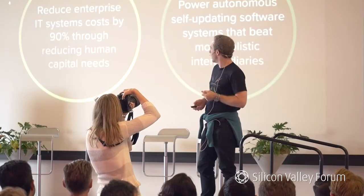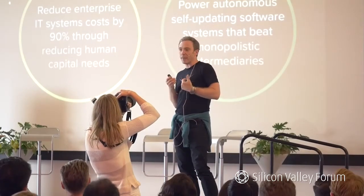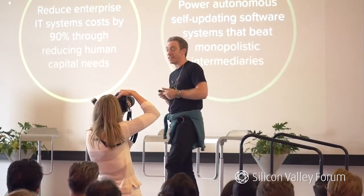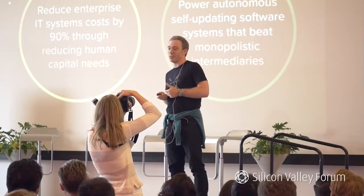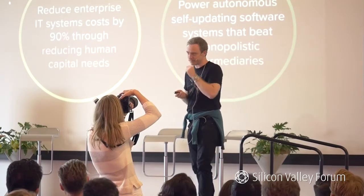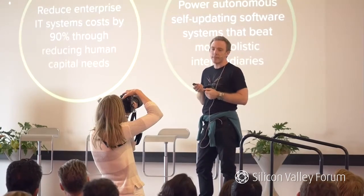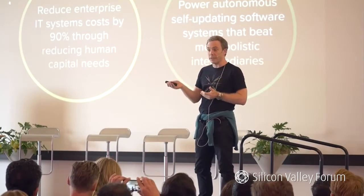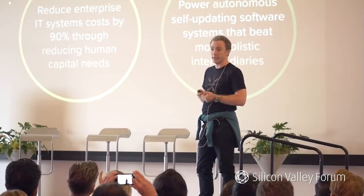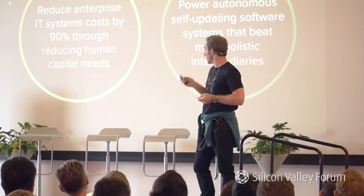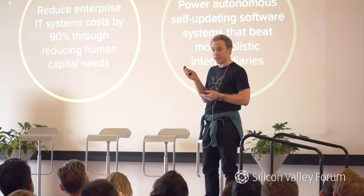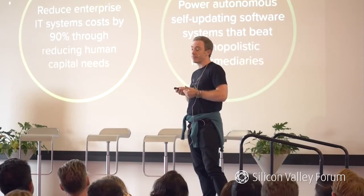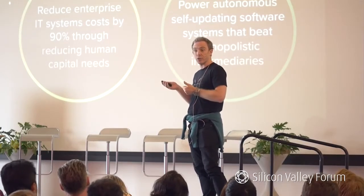Objectives. I think often we hear blockchains — the value proposition of blockchains described as, it's a blockchain, right? Why is this thing valuable? Oh, it's a blockchain, don't you know these things are great? But we try and focus more specifically on what value these networks provide to the users of the system. The two big objectives of DFINITY are: one, to reduce enterprise IT system costs by sort of 90% through reducing the need for supporting human capital.